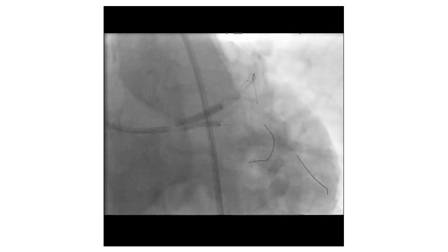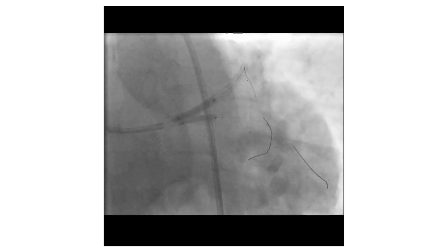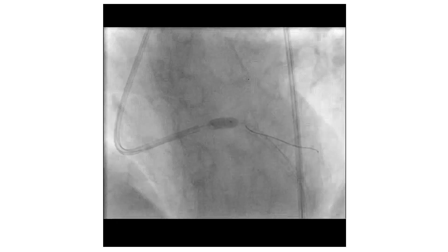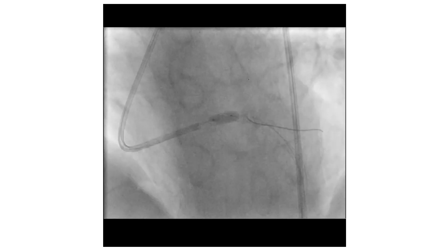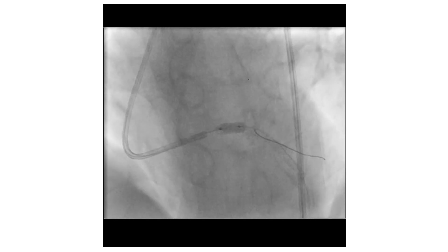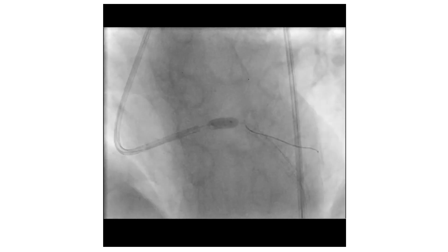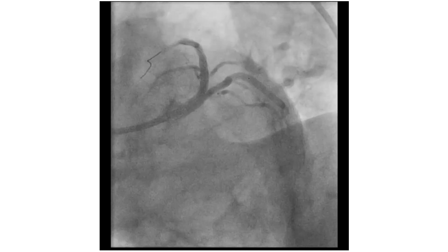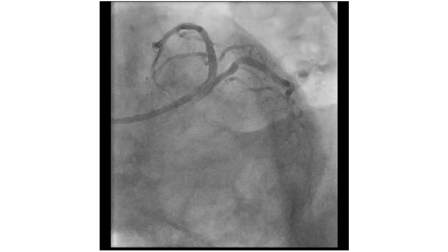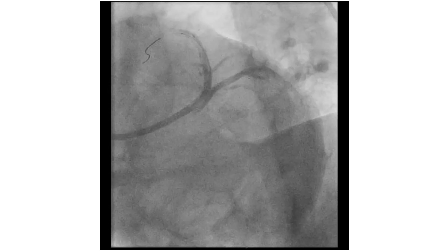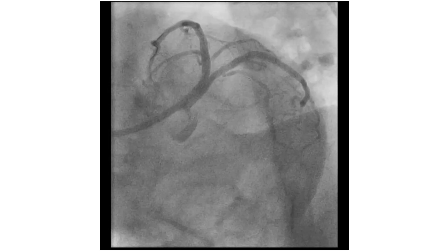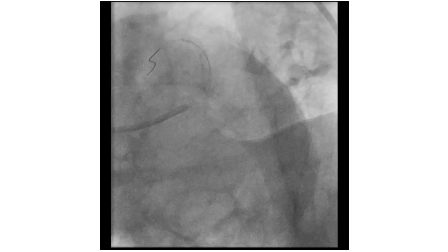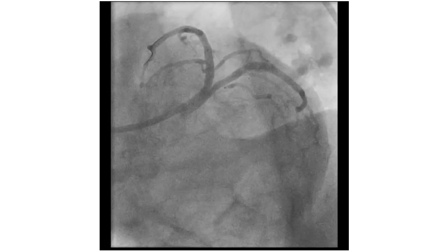Kissing balloon inflation was done in both vessels. Final POT again with a non-compliant balloon was performed. This is the final result — there was no need to put a stent in the side branch.